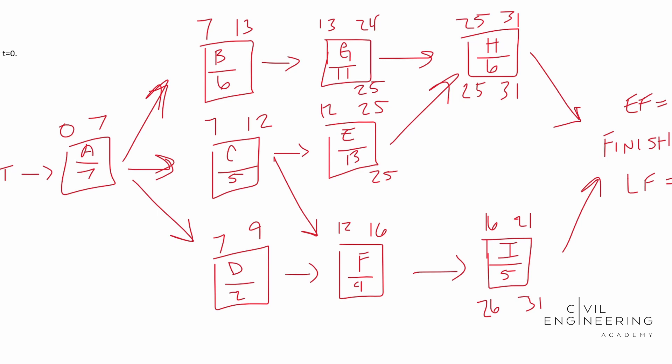Cool. So 25 minus 11, that's going to be 14. 25 minus 13, that's going to be 12. F, 26 minus four is 22. D, the earliest finish or the latest finish can be day 22 and it's two days long. So this means day 20. So that means day 20 is going to be your late start for D.